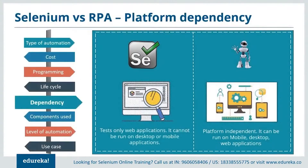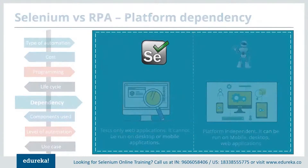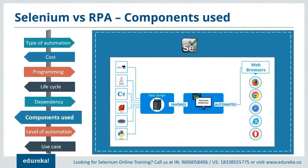Let's talk about platform dependency. Selenium can be run on different browsers but it can test only web applications — no mobile or desktop applications can be tested using Selenium. Whereas RPA can run on any platform, be it web, mobile, or desktop applications. Now let's talk about the major component used by these tools. Selenium uses web drivers to automate any task. Test scripts written in any programming language can be invoked by the system and automated using Selenium WebDriver, which can run on different browsers like Chrome, Safari, and Mozilla.